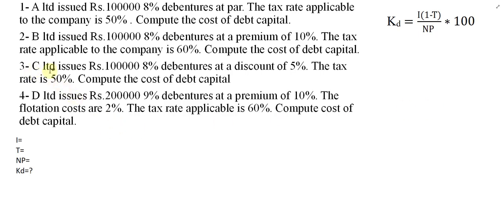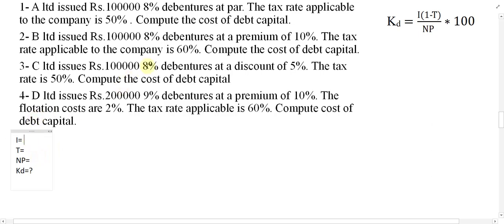Bismillah ar-Rahman ar-Rahim. Let us go for the next example. A company issued debentures of rupees 1 lakh at 8 percentage, at a discount of 5 percentage. The tax rate applicable to the company is 50 percent. First of all we have to find out I, which is 8 percentage of 1 lakh, so I becomes equal to 8,000.